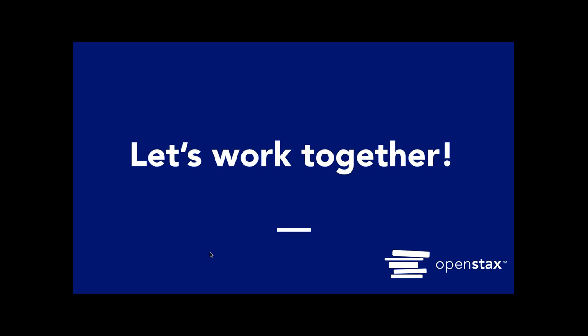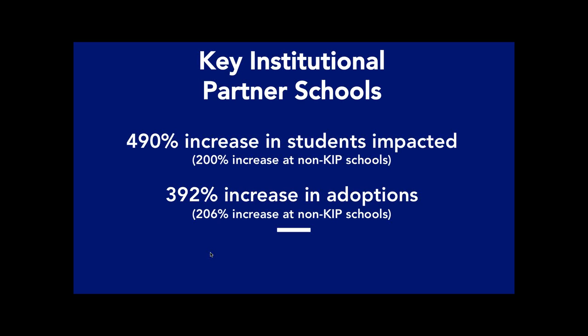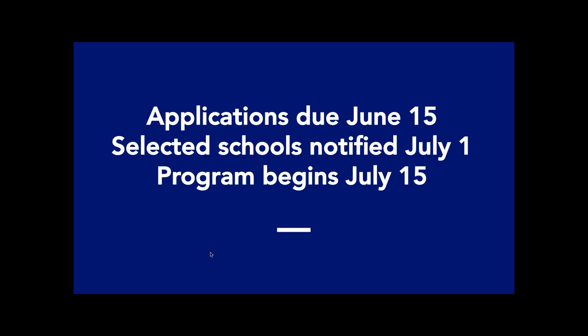We have an institutional partnership program at OpenStax where you can work with us one-on-one to develop a strategic plan for your campus. We've shown this works — schools that follow these strategic plans see significant increases in students impacted and increases in adoptions. Our next application period is June 15th, selected schools will be notified July 1st, and the program begins July 15th. I'll put a link in the chat box. At this time, I'm going to turn it over to Quill.